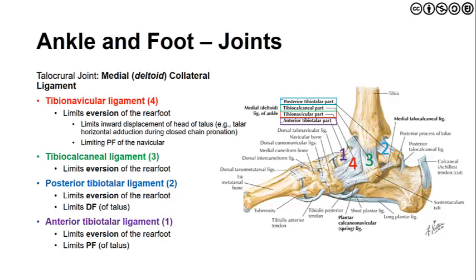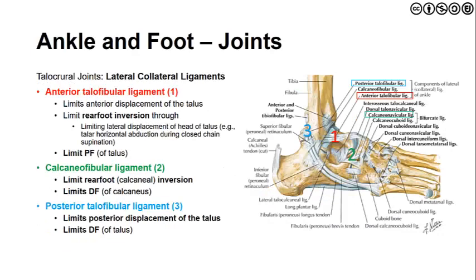The tibiocalcaneal ligament runs from the medial malleolus of the tibia down to the sustentaculum tali of the calcaneus, also limiting eversion of the rear foot. There are also two tibiotalar ligaments. The anterior tibiotalar ligament limits eversion and plantar flexion of the talus. The posterior tibiotalar ligament runs to the posterior process of the talus, limiting eversion and dorsiflexion. In essence, the posterior and anterior tibiotalar ligaments serve opposing motion restrictions — dorsiflexion and plantar flexion respectively.